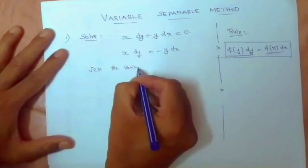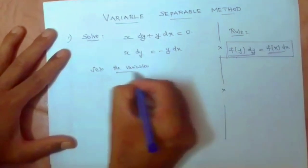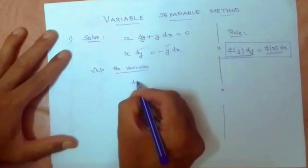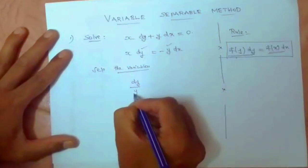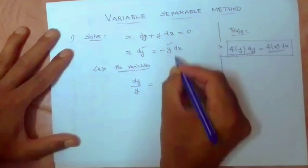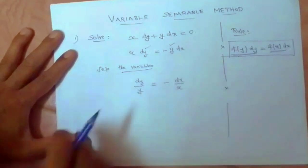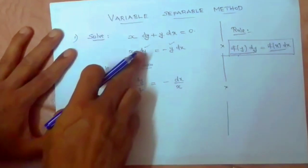So y terms I am going to write here: dy divided by y, which is equal to minus x terms along with dx: dx divided by x. So listen here, y terms in one side along with dy, x terms on the other side along with dx.